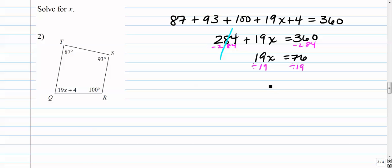And finally, we are going to divide by 19. So when we divide by 19, they cancel. We get 1x equals 4. And that's it. That's all we really were asked to do.